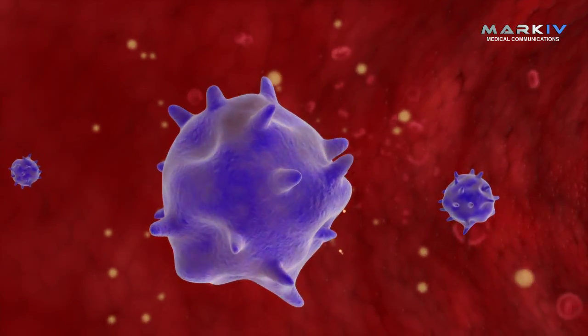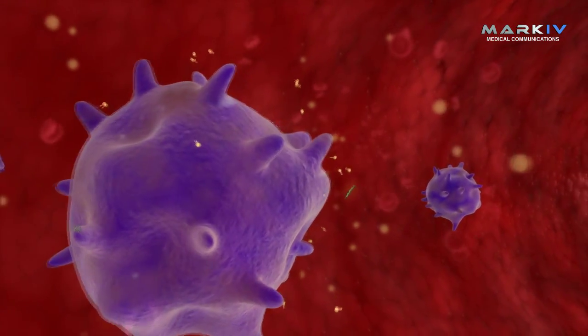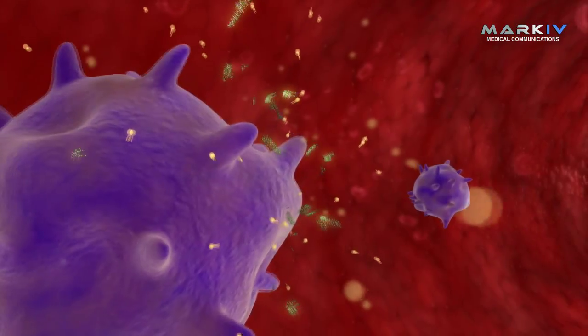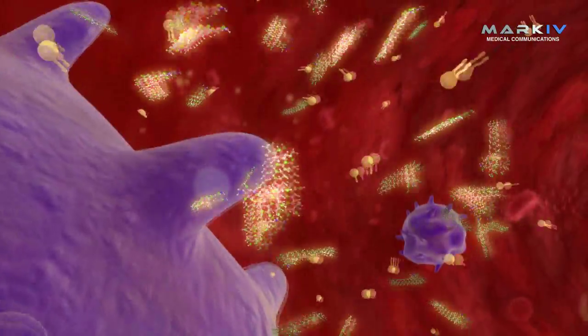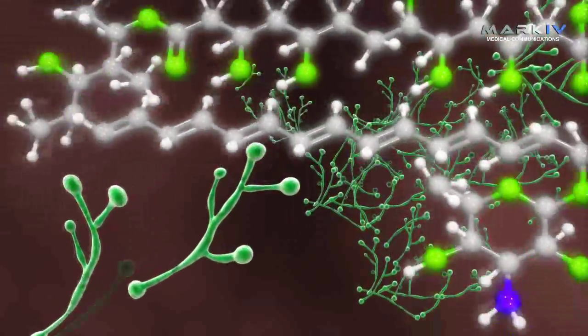As the liposomes degrade, they release amphotericin B at the site of infection. This controlled release is the reason why CIPLA's phosome has an efficacy similar to the parent compound but is much less toxic.